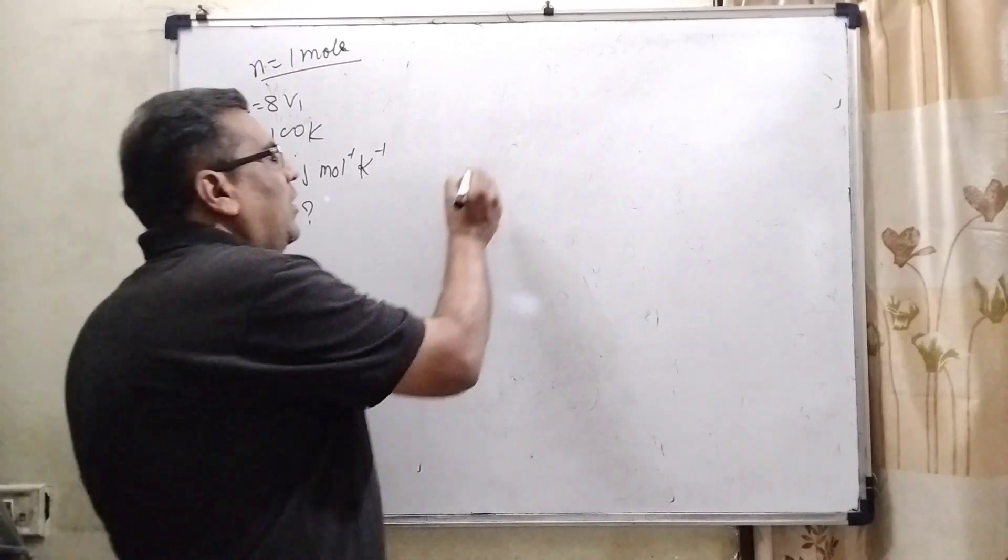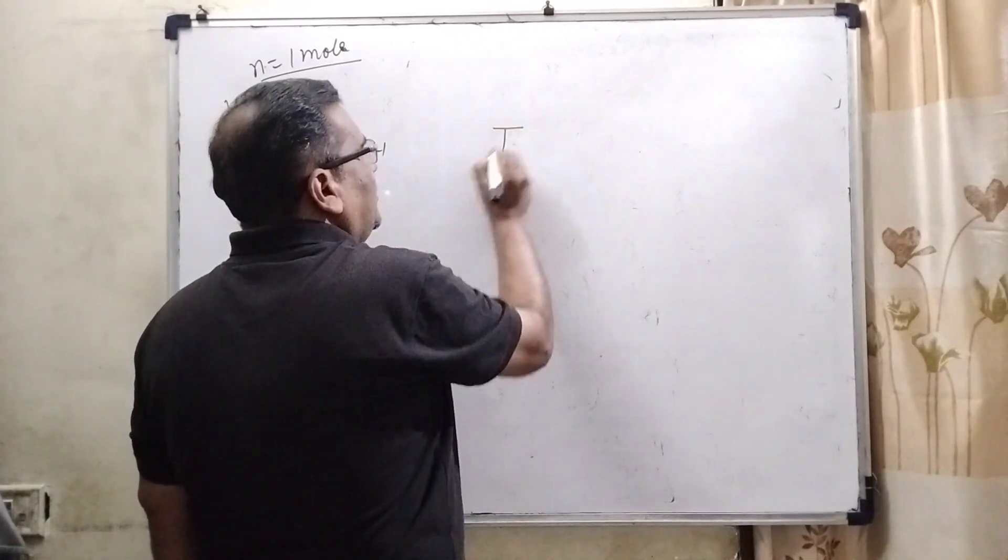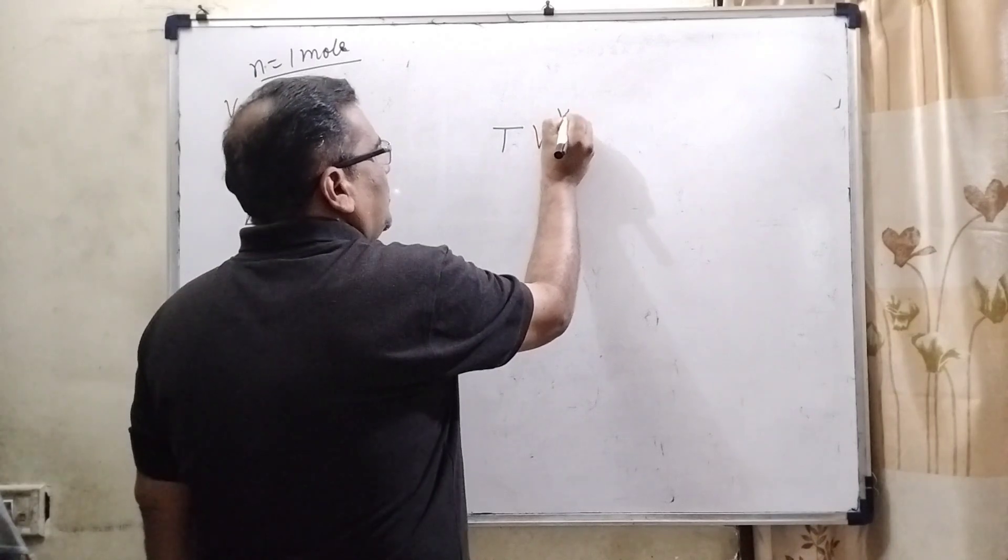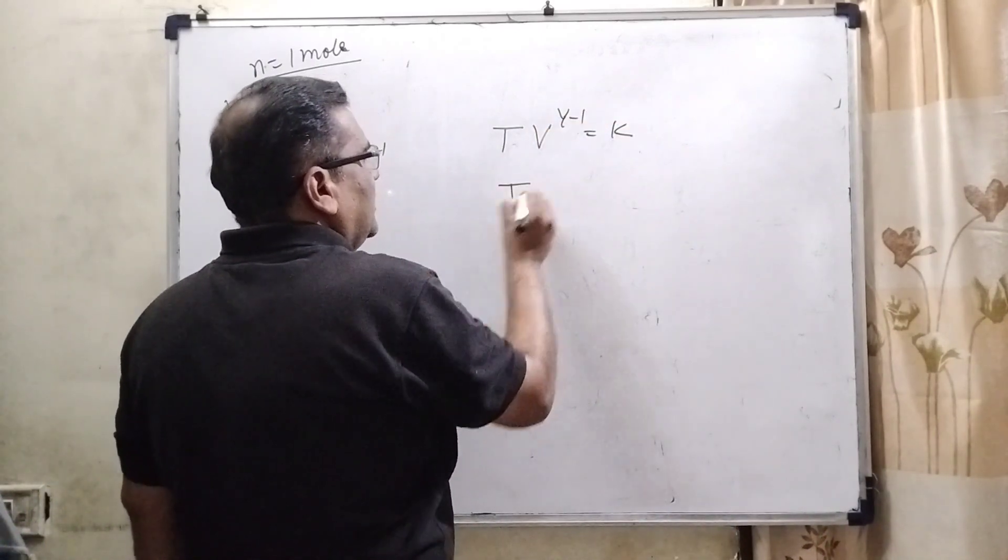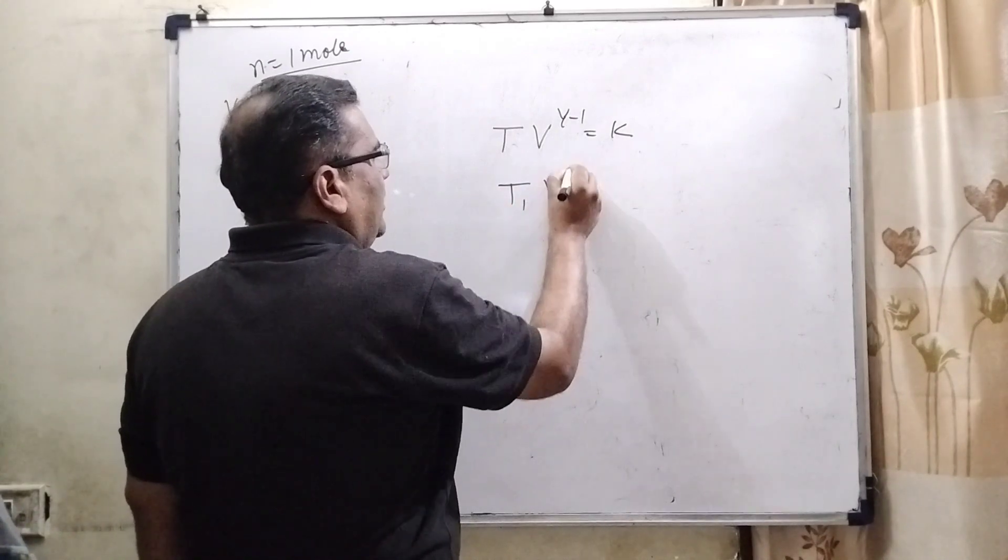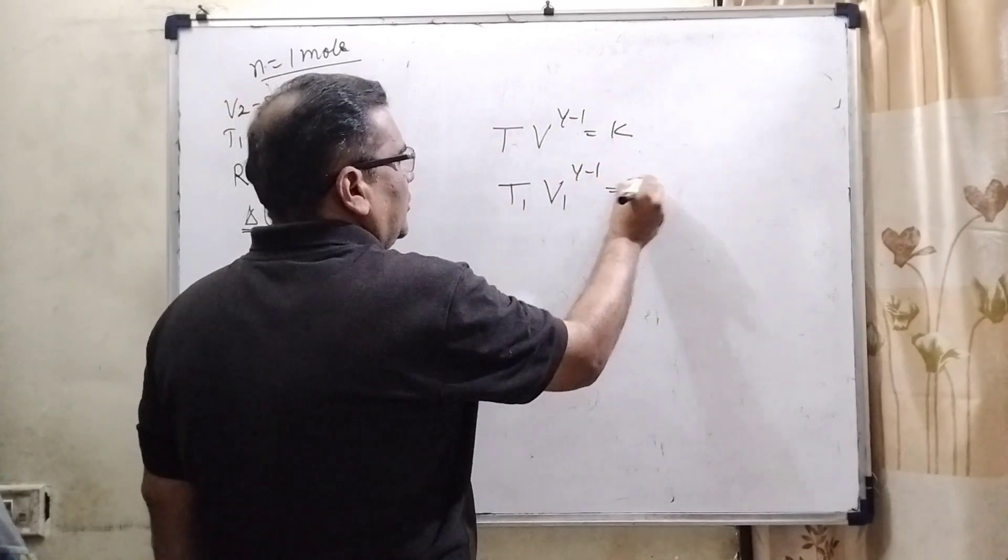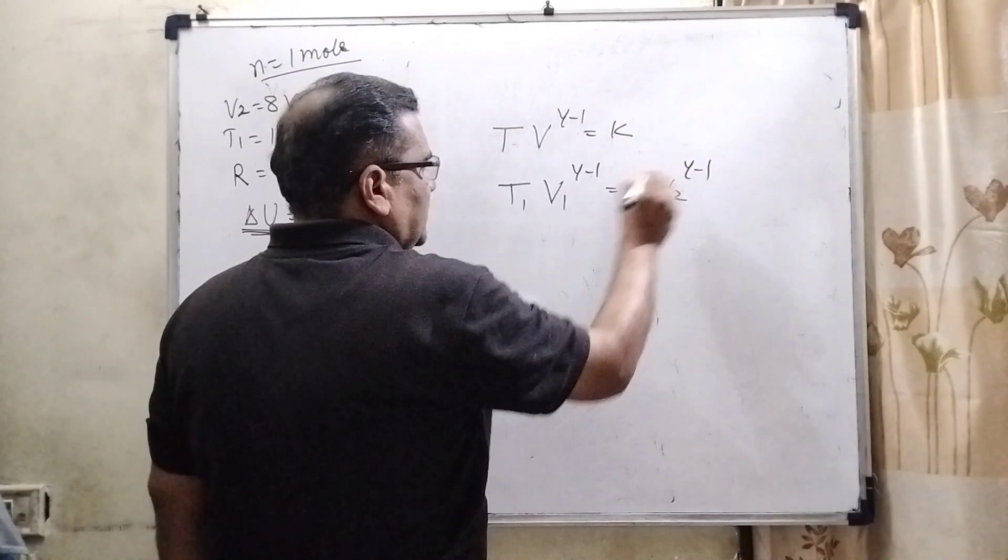As we know that for adiabatic expansion, we are using the formula TV raise to power gamma minus 1 equal to constant. T1V1^(γ-1) equals T2V2^(γ-1).